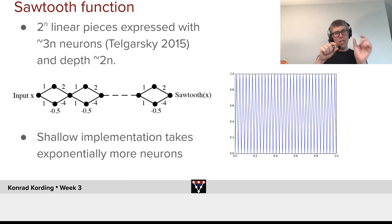It basically takes a local function that makes a little sawtooth, and then iterates that in a really clever way, by going basically back and forth over the areas where it goes back and forth. So a shallow implementation of this takes exponentially more neurons. So here we have a function where it exponentially helps us to make it deep.